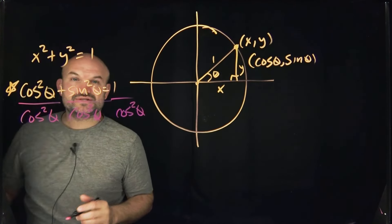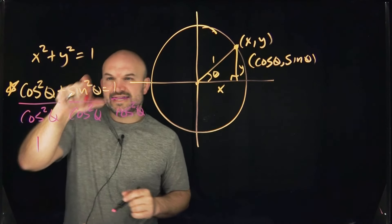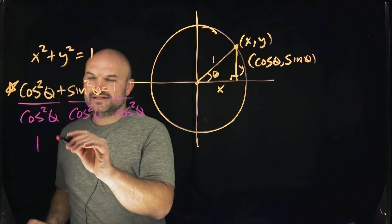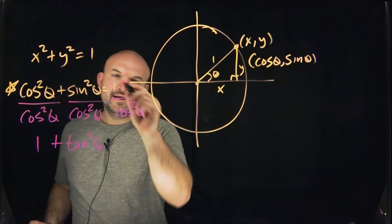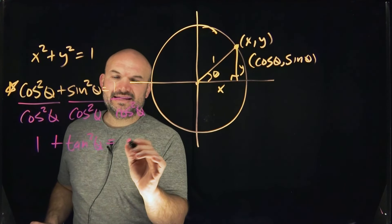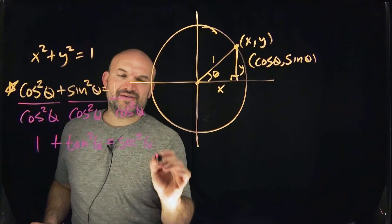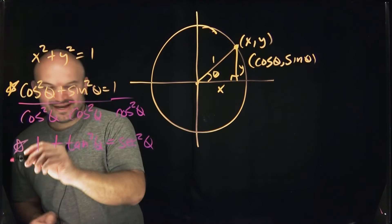So cosine squared of theta divided by cosine squared of theta is going to equal one. Sine squared of theta divided by cosine squared of theta is going to equal tangent squared of theta. And one over cosine squared of theta is going to equal secant squared of theta. That is my other one.